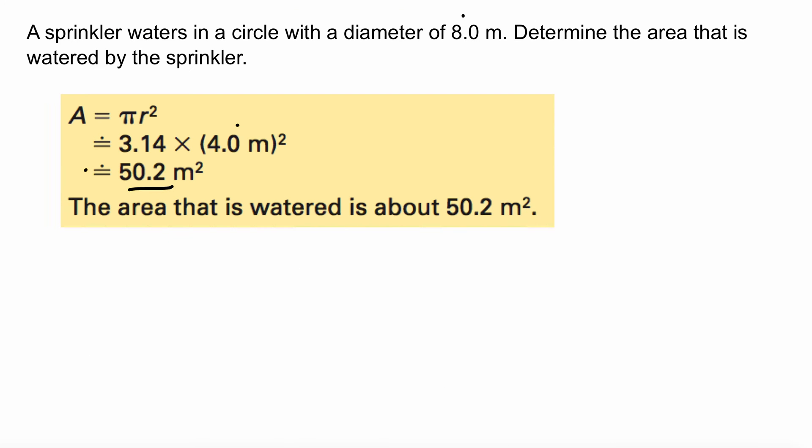Alright, so let's move on, and this is directly from the textbook. Alright, so the sprinkler waters in a circle with a diameter of 8 meters. Determine the area that is watered by the sprinkler. Alright, so we have the area equals pi times radius squared, 3.14 times 4 meters. Wait a minute, that's 8. Why is that 4? Well, we know that the diameter is half of the radius. Alright, so 0.5.